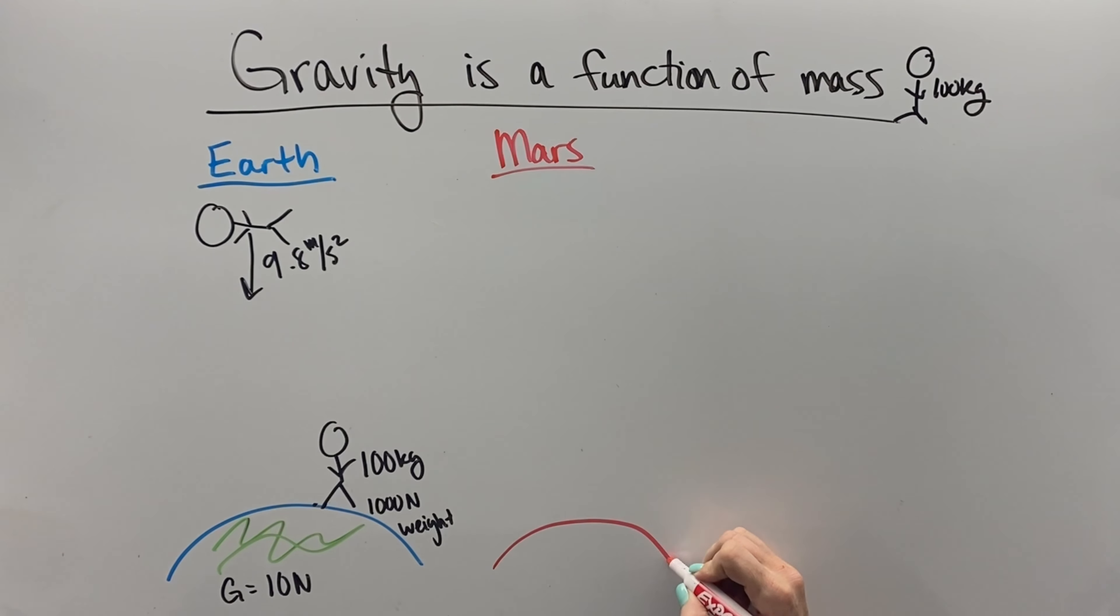On Mars, Mars is a smaller planet. Mars has a third of the mass of Earth, and so the gravity of Mars is 3.7 newtons, which means that same 100-kilogram person - you're still who you are, all the bones and flesh and everything...